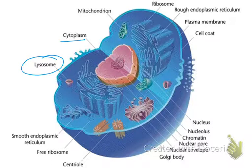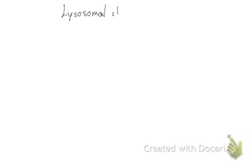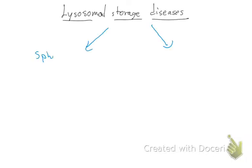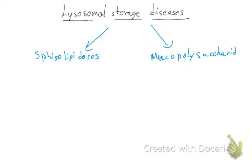Now we're going to enter into the pathways of the lysosomal storage diseases. There are two groups: sphingolipidosis and mucopolysaccharidosis. The sphingolipidosis group has six diseases and the mucopolysaccharidosis group has two — these are the most important ones.